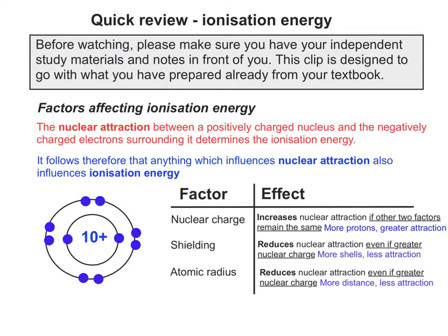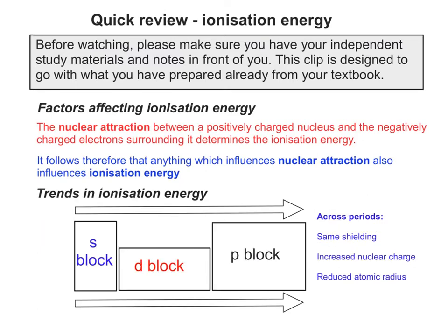So let's now look at some of the trends across the periodic table. Across periods you get the same shielding because you have the same shell number, increased nuclear charge because you have one more proton each time, and reduced atomic radius because the increased nuclear charge draws the outer shell in closer each time. The resulting effect is that ionisation energy increases.